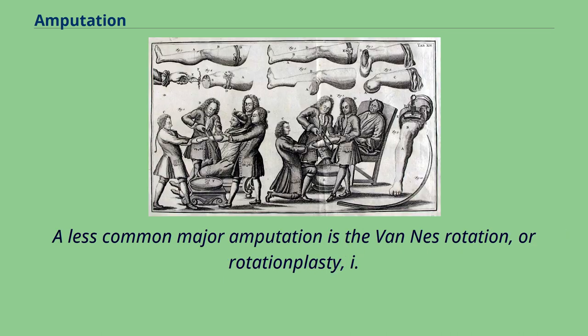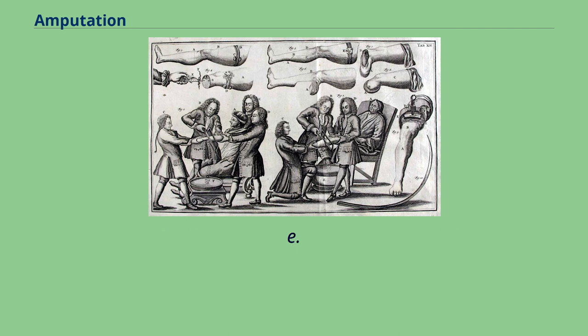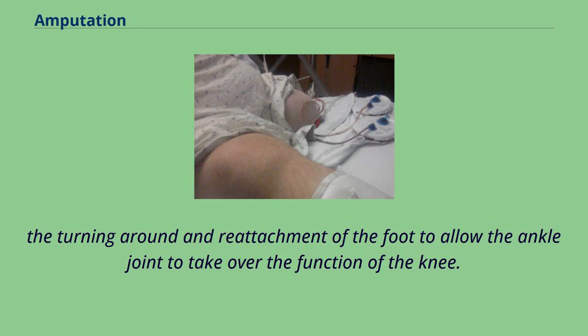A less common major amputation is the Van Ness rotation, or rotationplasty, i.e., the turning around and reattachment of the foot to allow the ankle joint to take over the function of the knee.